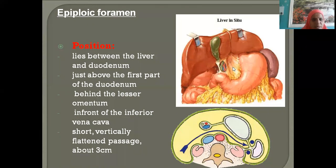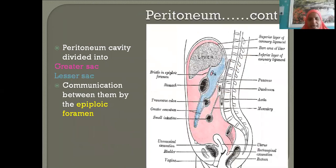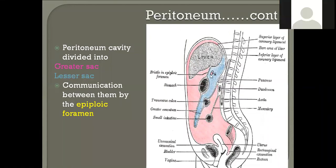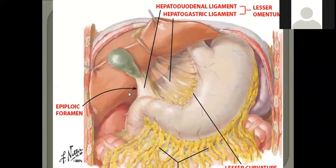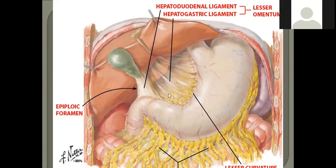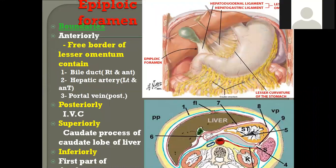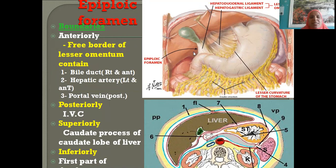Behind this hole is the lesser omentum; the boundaries will be described soon. The peritoneal cavity is divided into: greater sac (pink) and lesser sac (blue), and the hole where the arrow is shown — where greater sac communicates with lesser sac — is the epiploic foramen. The epiploic foramen is either a three-mark or five-mark question and is very important. Let us understand the boundaries of the epiploic foramen.